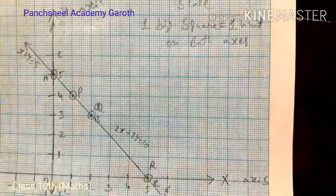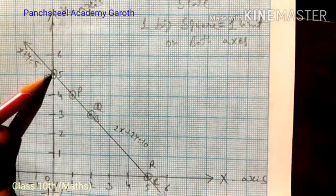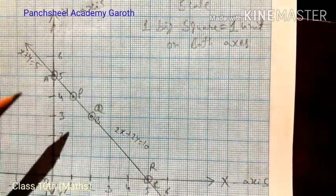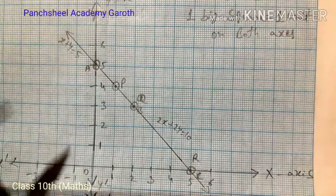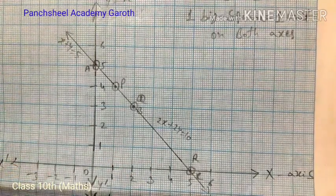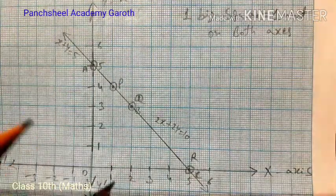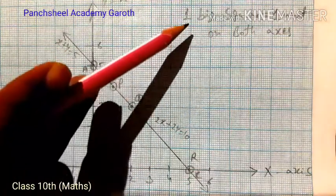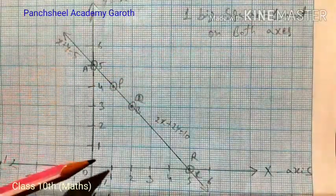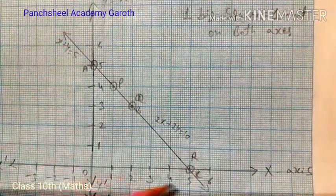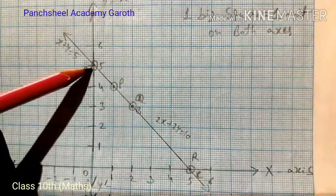Now we plot the graph. Draw the x-axis and y-axis. Take a scale of 1 unit = 1 big square on both axes. Plot the points from table 1: (0, 5), (2, 3), and (5, 0). Then plot the points from table 2 on the same graph.